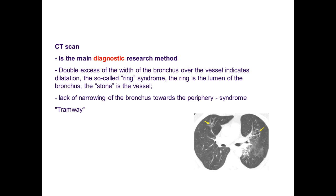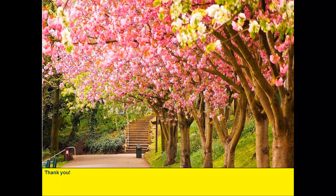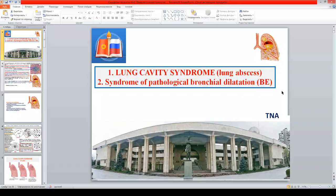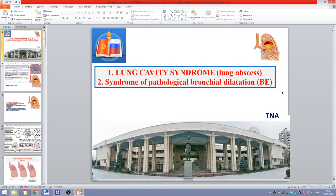CT scan is the main diagnostic method — the gold standard. A double excess of the width of the bronchus over the adjacent vessel indicates dilation — the so-called signet-ring sign: the ring is the lumen of the bronchus, the stone is the vessel. Lack of narrowing of the bronchus towards the periphery is called the tram-way syndrome. I have finished my lecture — I wish you strong health, my dears.